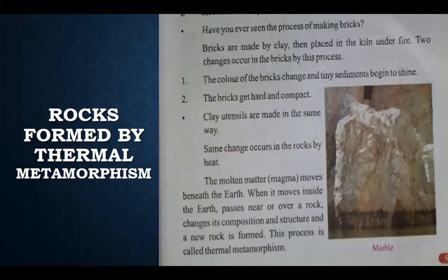From this process, two kinds of changes come in the bricks. Number one: the color of the bricks changes, and tiny sediments begin to shine. The first change is that the color changes — from mud color they convert to dark brown or light brown. A bit of shine also comes in them. The second change is that the bricks get hard and compact — they become solid baked bricks. So clay utensils are made in the same way, and similar kinds of changes are seen in them.